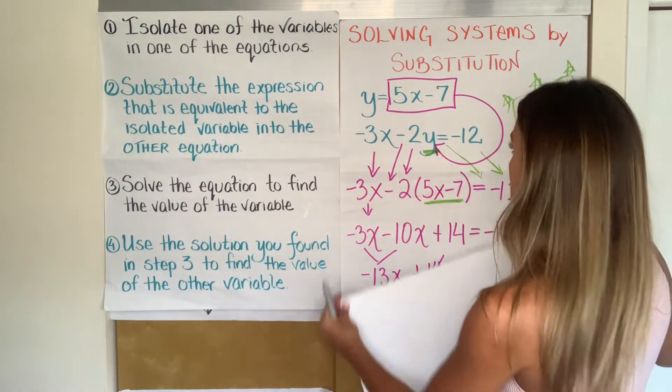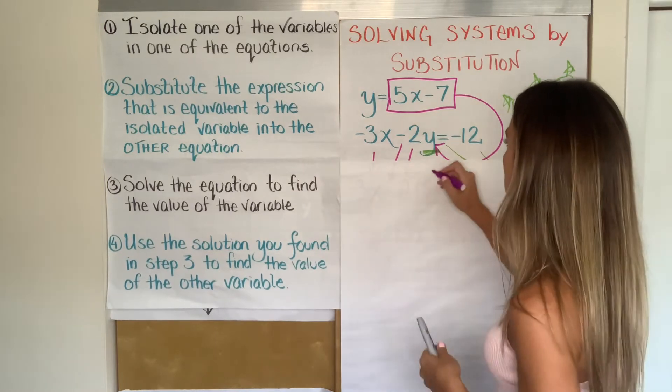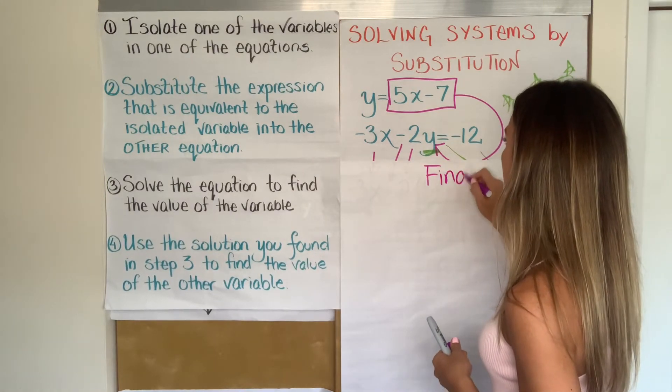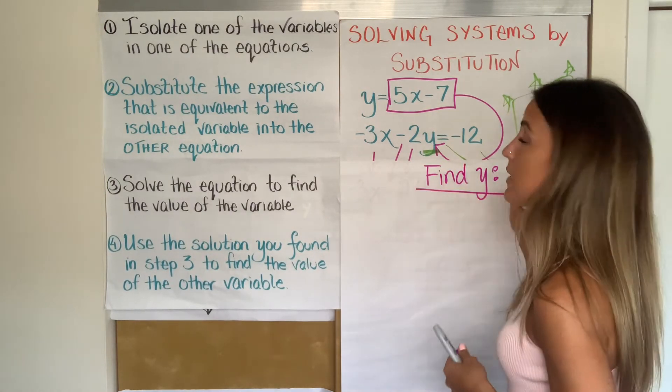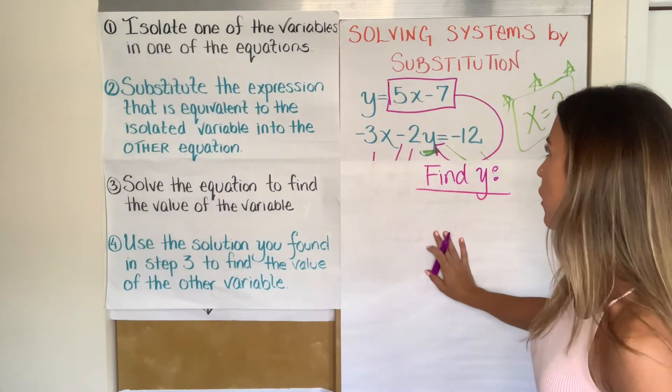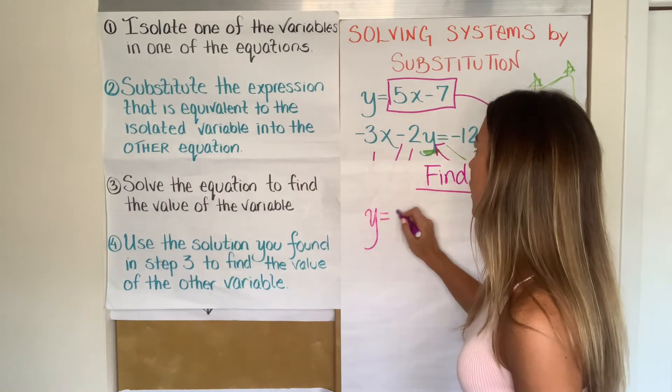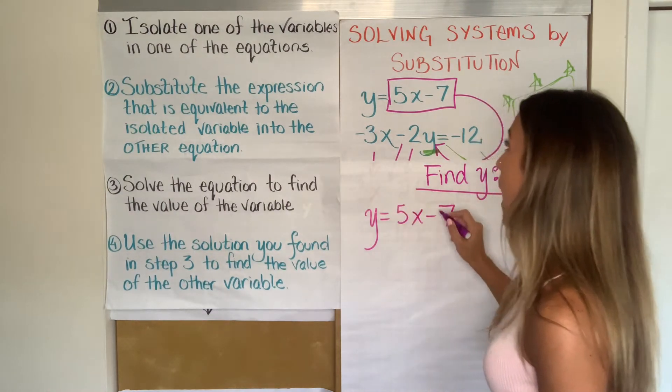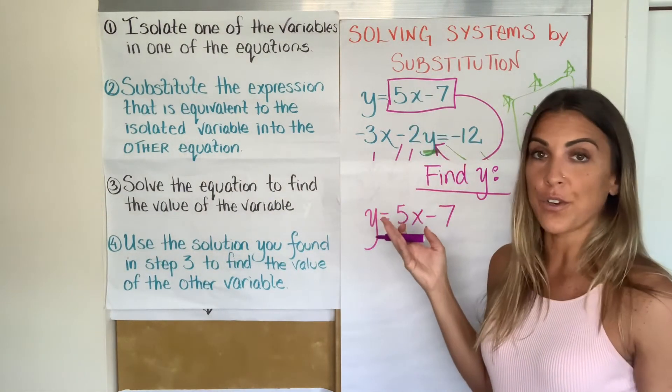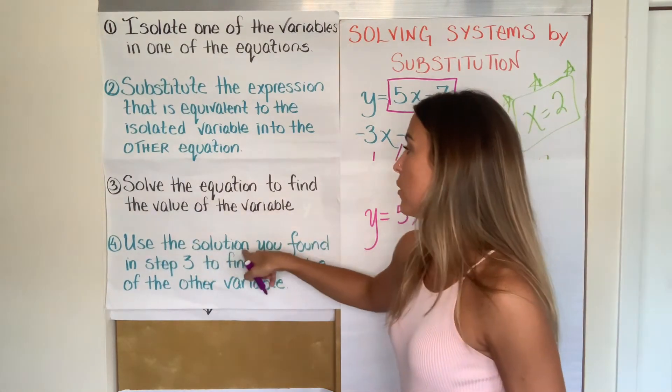So we're going to go into either one of these equations. It doesn't matter which one. I'm going to say the top one looks a lot easier to use. And let's call this, if you're taking notes, find Y. So this is us finding Y. This is basically step four that I'm doing right now. So we're going to find Y. I'm going to take the top equation, Y equals 5X minus 7. But I could have taken either one. Top equation just looks easier to me. And I'm going to use my solution. My solution was that X equals 2 to find the other one.